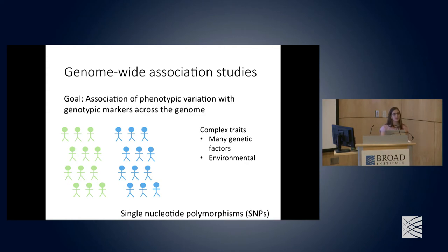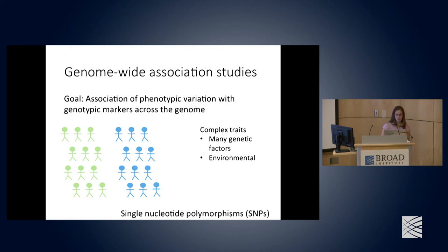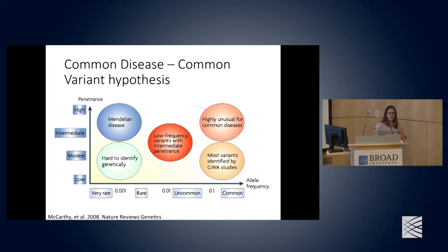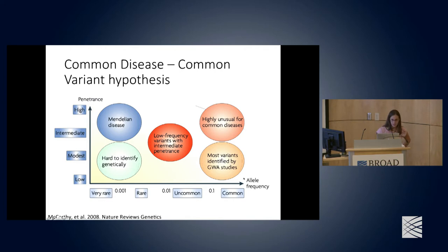GWAS are particularly useful for complex traits — traits that have both a genetic and environmental component, where the genetic component is based on many genetic factors, not just a single mutation. GWAS are really getting at the common disease, common variant hypothesis, as illustrated in a plot from a 2008 Nature Reviews Genetics paper.